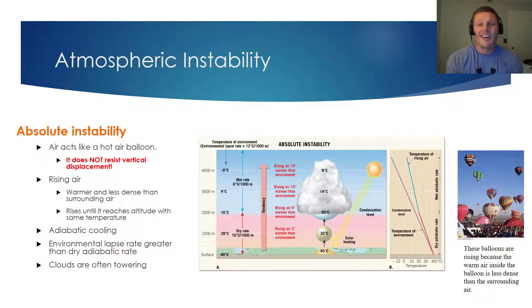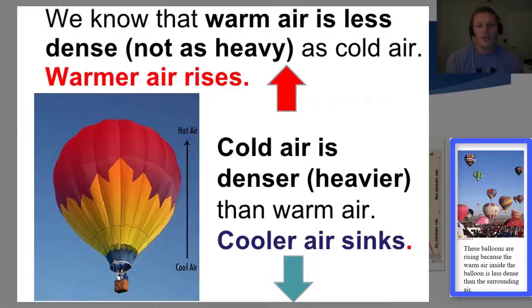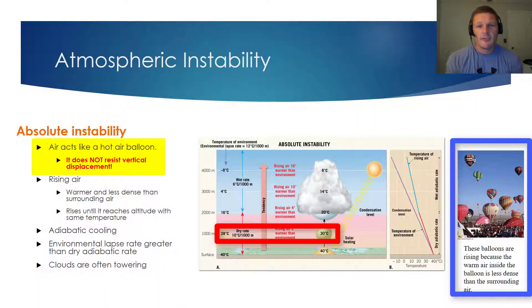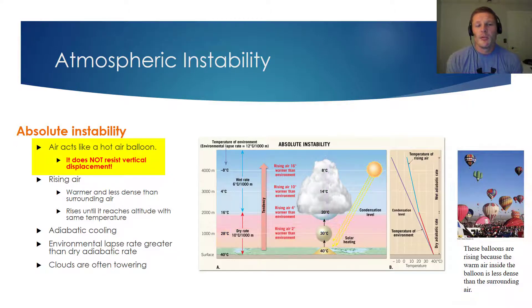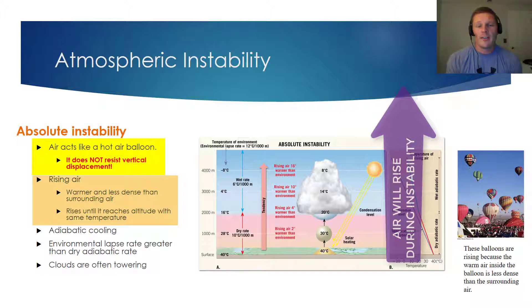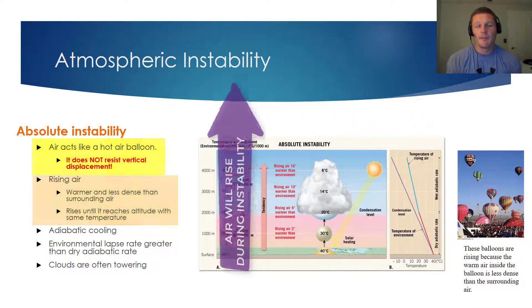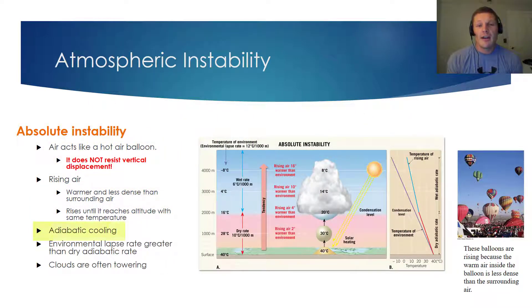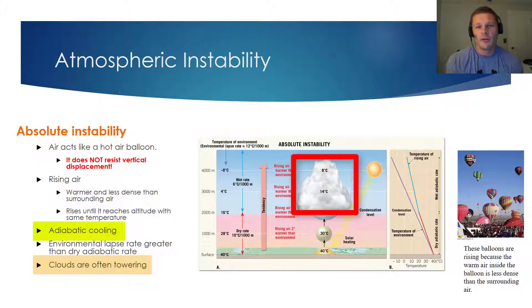Our final consideration is atmospheric instability. With instability, the air will act like a hot air balloon. A hot air balloon rises because the warm air inside is less dense than the surrounding air, and with that warm air being less dense, its tendency is to rise upward. As long as air is warmer than its surroundings, it will rise — according to the exact same concepts that explain why hot air balloons rise. With absolute instability, air will not resist vertical displacement; it will rise and continue to rise until it reaches a region with its same temperature. As that parcel of air rises, it undergoes adiabatic cooling. The clouds that form from atmospheric instability can be towering — in fact, it's absolute instability that produces some of those powerful thunderstorms we observe.